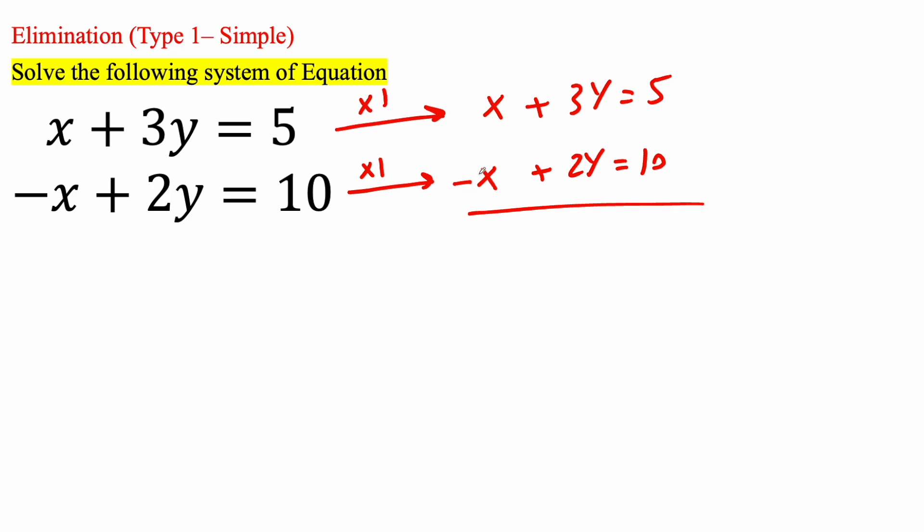x minus x gives you 0, so it gets eliminated. So we're going to add now. 3y plus 2y is going to give us 5y is equal to 5 plus 10 is 15.